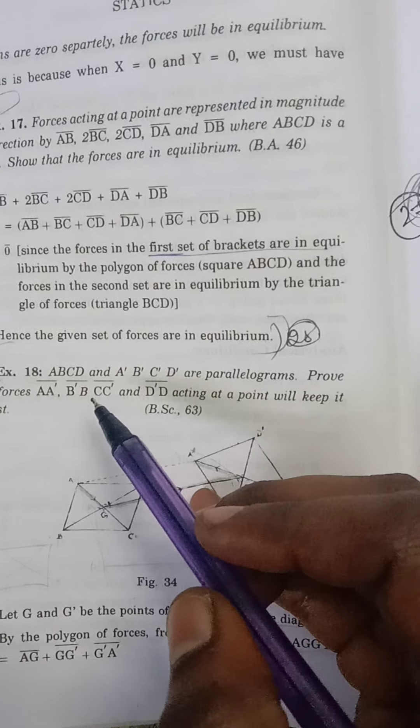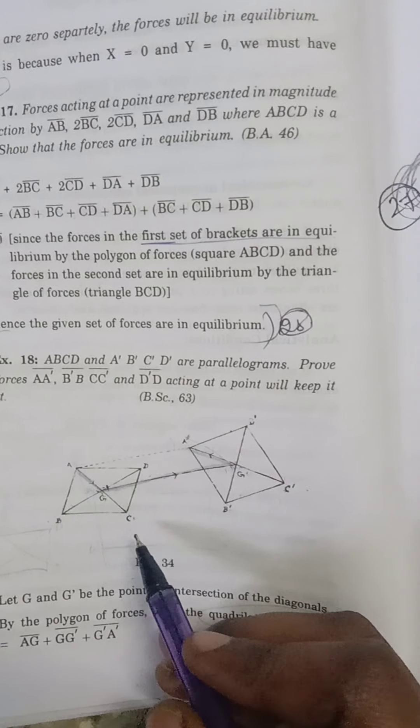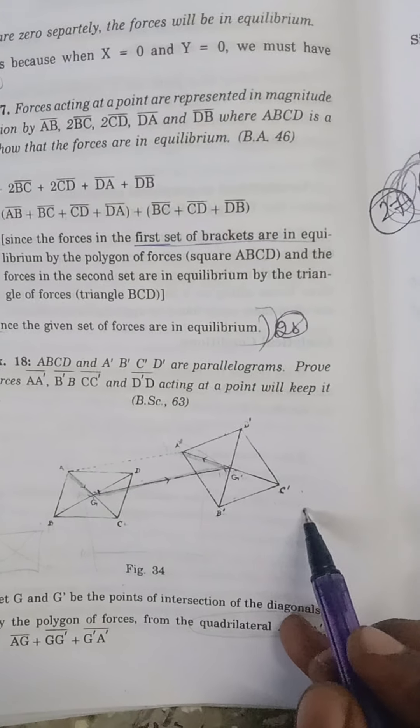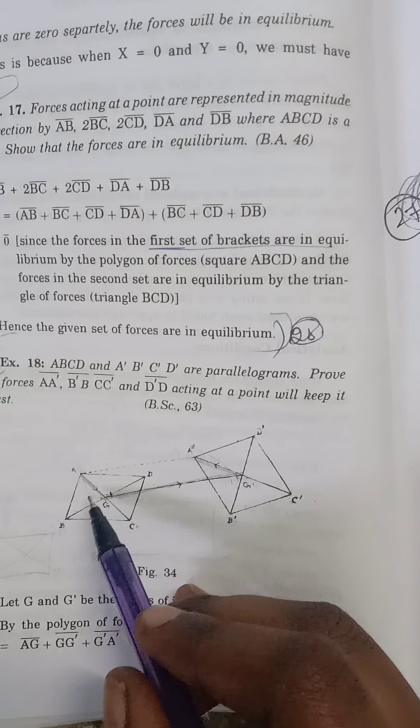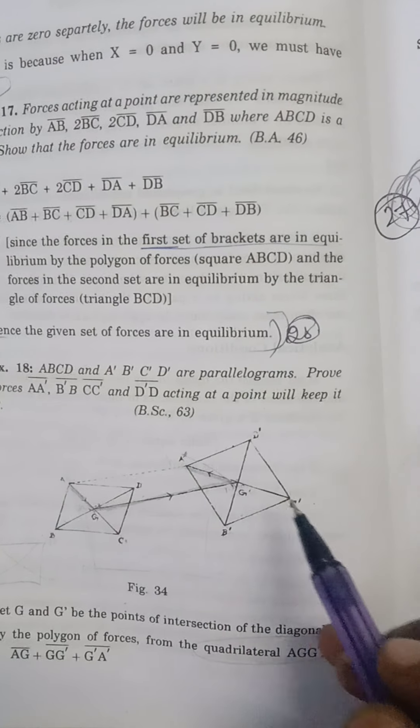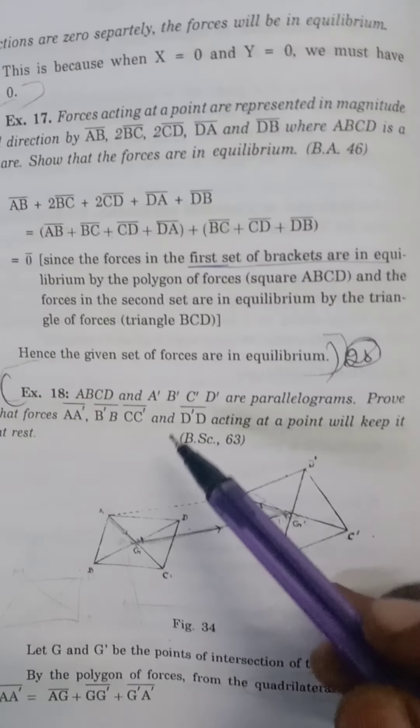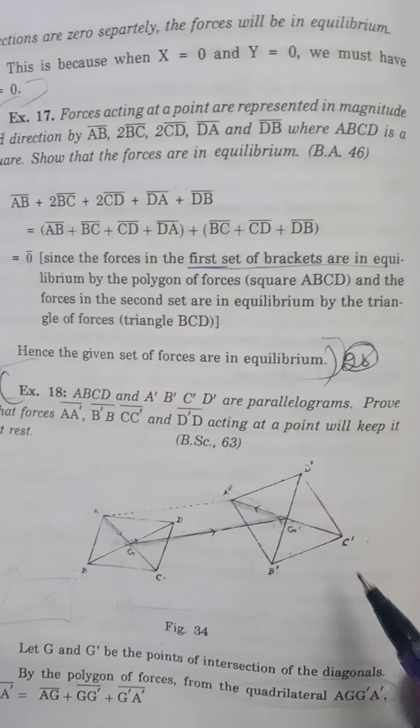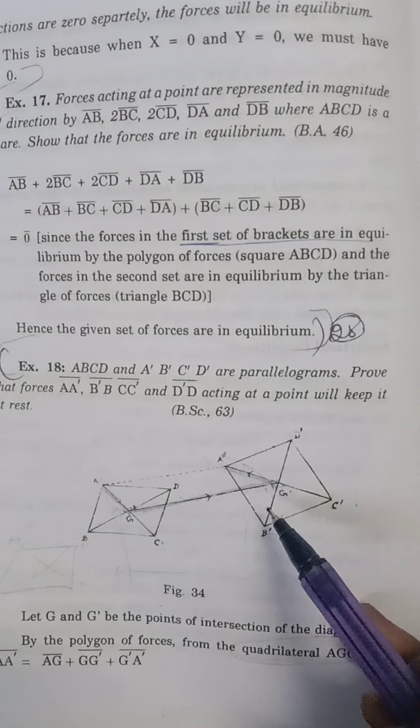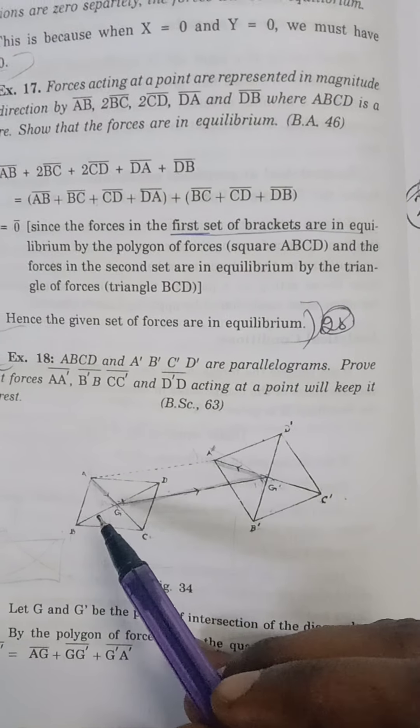Next is C to C', which is given here. Then the next one is D' to D, so D' to G', G' to G, and G to D.